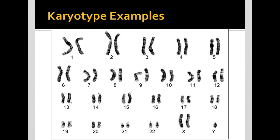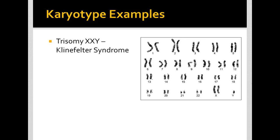This is another example of a trisomy that someone can live a long life with. You might notice here that we have three sex chromosomes. We have XXY. This is characteristic of somebody with Klinefelter syndrome.